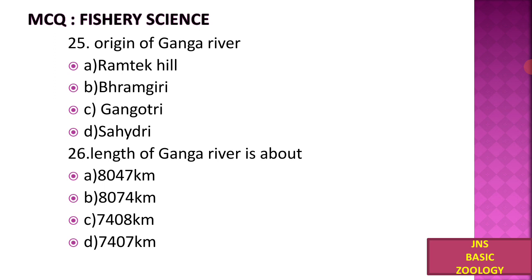Next, from where does the Ganga river originate? A) Ram Tech Hill, B) Brahmagiri, C) Ganga River, D) Sahyadri. The Ganga river originates in the greater Himalayan range. The length of the Ganga river is about 8,047 kilometers.